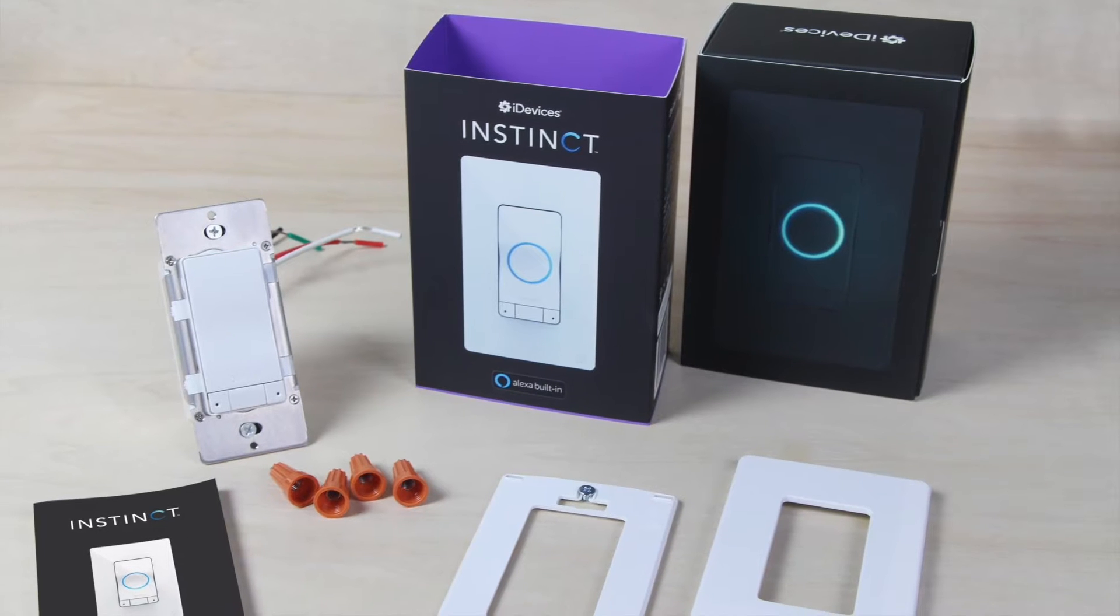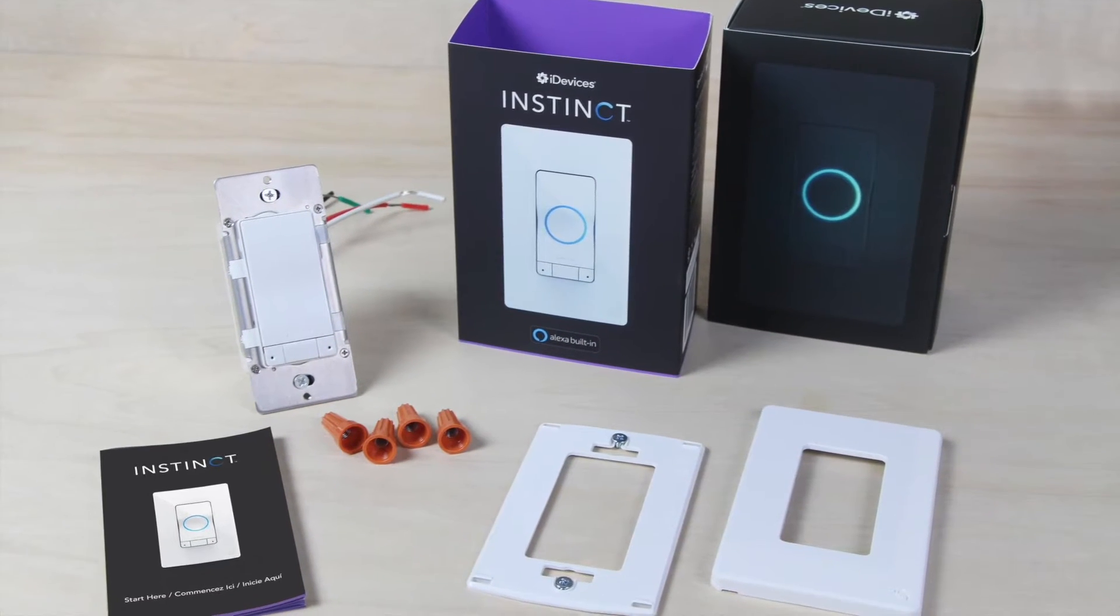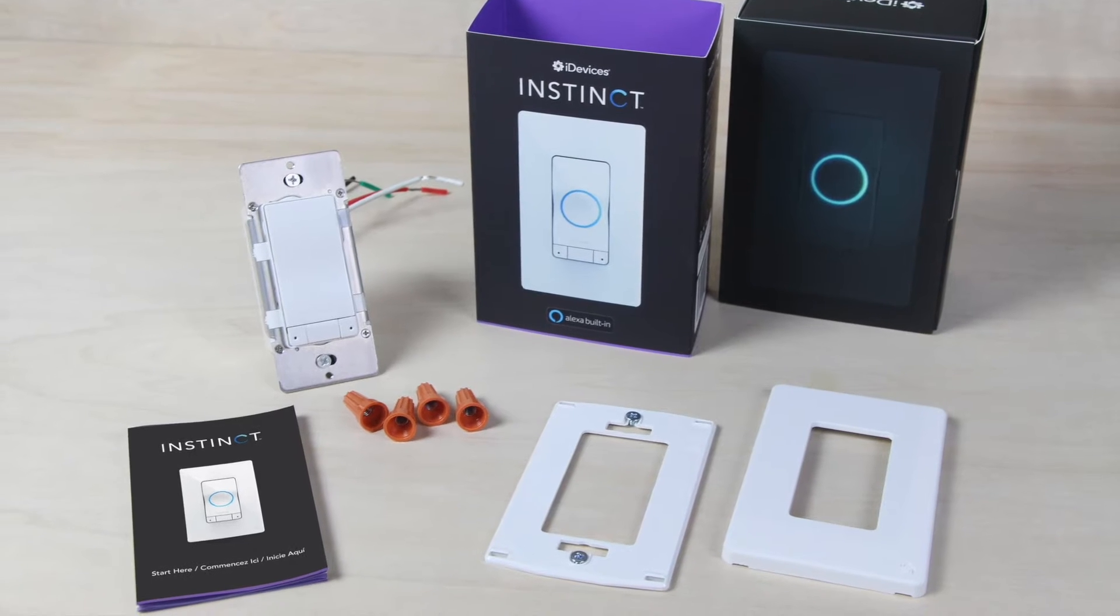In the box, you will find the parts you need for installation: the Instinct wiring guide, faceplate, wallplate, and a few wire nuts.